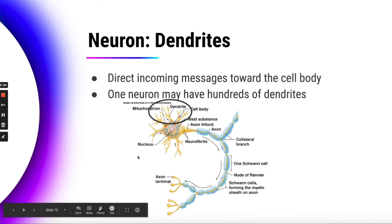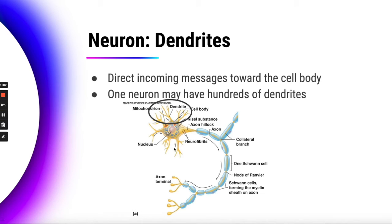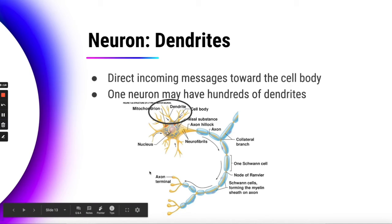Next we have dendrites — those are the little branches you can see coming in toward the cell body. They bring information from neighboring neurons into this particular neuron, and one neuron can have hundreds of dendrites depending on the type of neuron and where in the body it is.